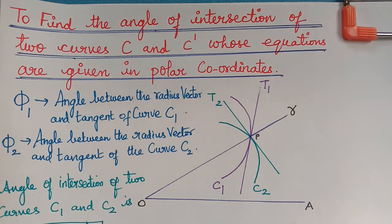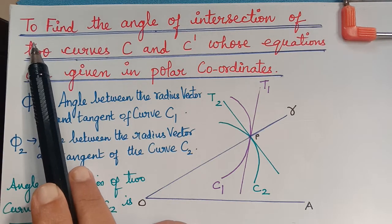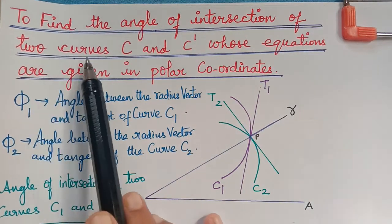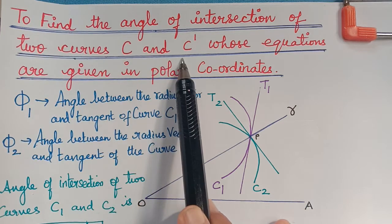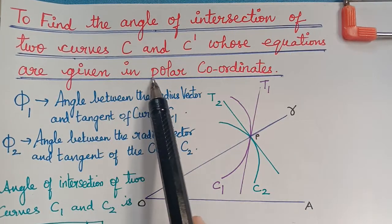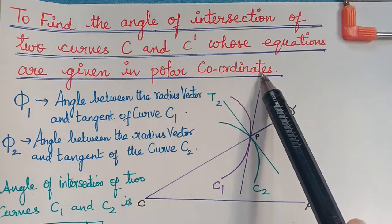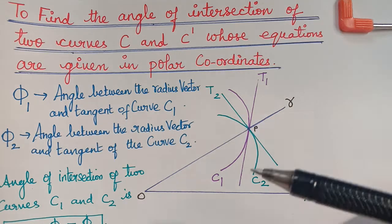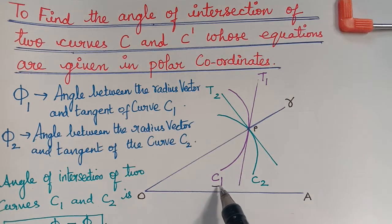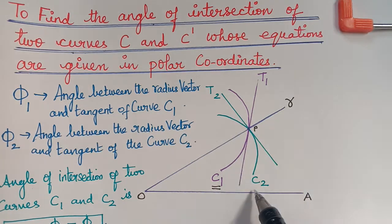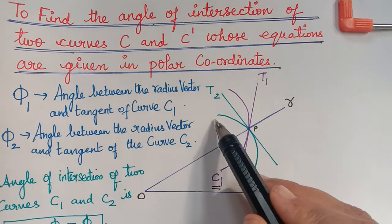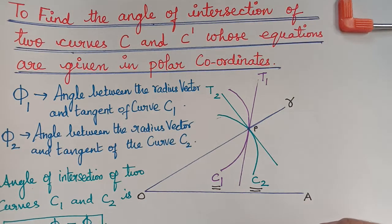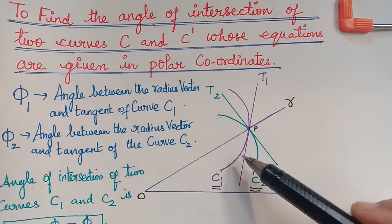Hello students. In this lecture we are going to learn how to find the angle of intersection of two curves C and C-dash whose equations are given in polar coordinates. This diagram represents the intersection of two curves — the first curve is C1 and the second curve C2 is represented here. We are going to learn how to find the angle between these two curves.